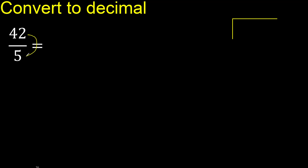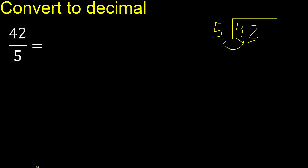42 divided by 5. 4 is less, therefore next: 2. 42 is not less, therefore work with 42. 5.